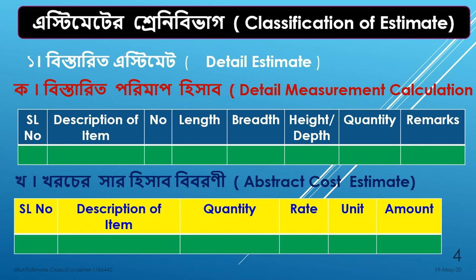The amount is calculated as quantity multiplied by the rate. This gives the total amount for each item. You can see the total amount in the estimate. If you have any questions about this, please comment.